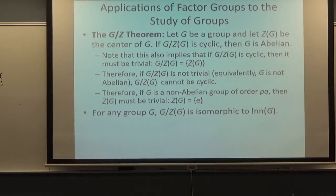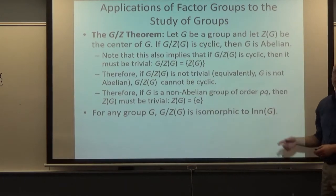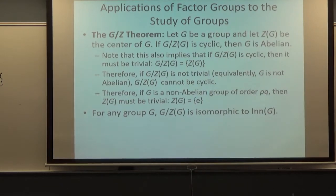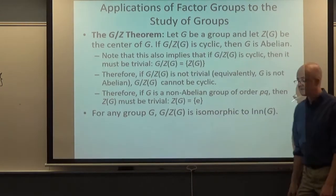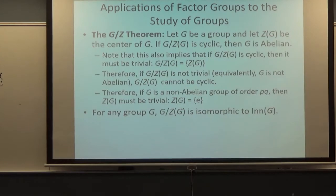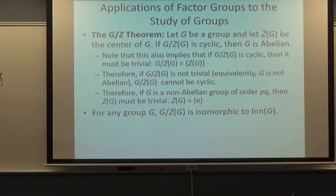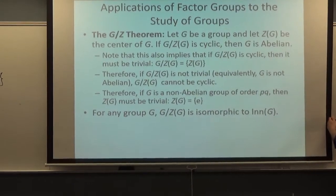Another fact mentioned that's possibly useful is that this factor group G/Z(G) is in fact isomorphic to the group of inner automorphisms. Which would also say, if you think about it, the group of inner automorphisms of G cannot be cyclic unless it's trivial. Because they're isomorphic: the only way G/Z(G) can be cyclic is if it's trivial, so the group of inner automorphisms cannot be cyclic unless trivial. Inner automorphisms are automorphisms defined by conjugation.